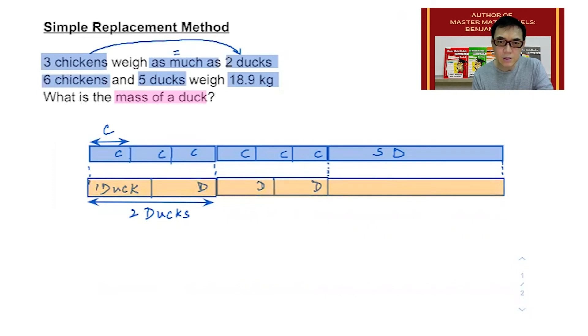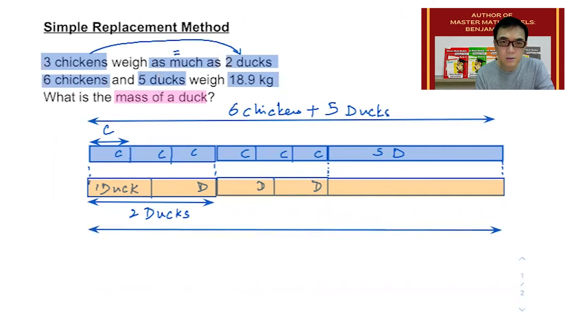6 chickens and 5 ducks have the same value as how many ducks? Can you tell me the answer? Your answer should be 9 ducks. If you did that, well done.